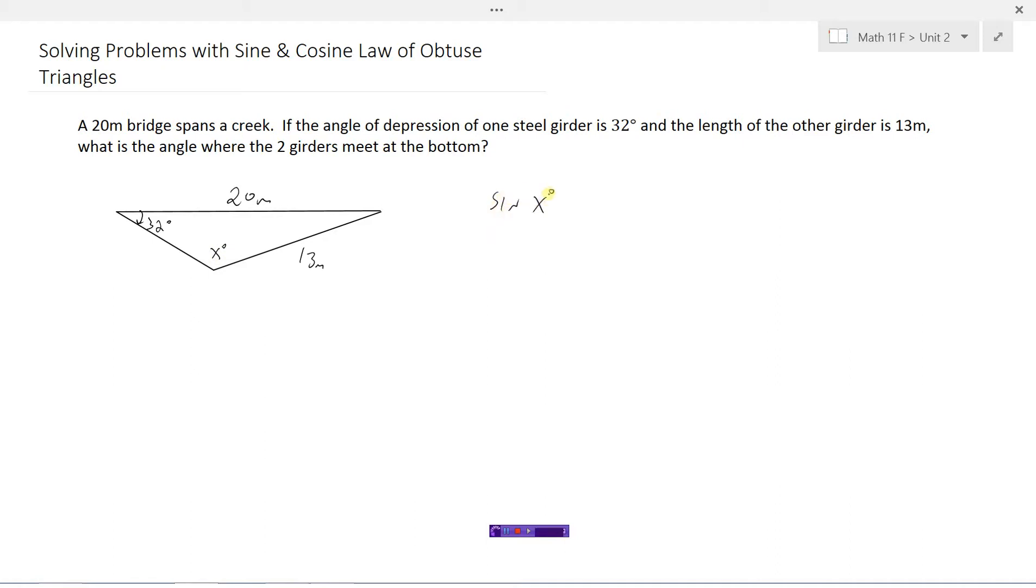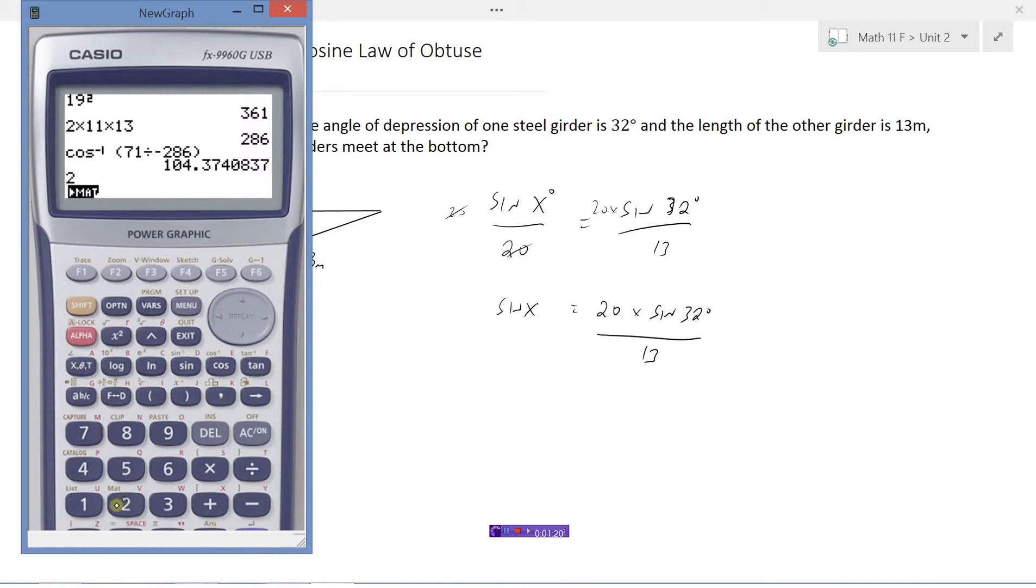So we'll have sine x divided by its opposite side which is 20 equals the sine of the other angle divided by its opposite side. We'll multiply both sides by 20 here. That'll wipe that out.